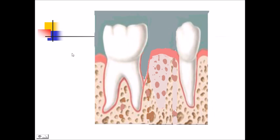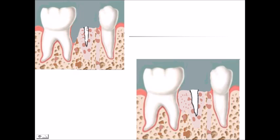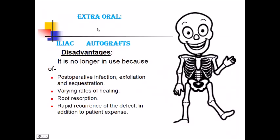Diagrammatic representation of bone swaging: a vertical defect and edentulous area are adjacent. A vertical cut is given and the bone is moved into the defect area — this is known as bone swaging. Iliac autograft from the extraoral site is no longer in use because of post-operative infection, exfoliation and sequestration of the graft, varying rate of healing, root resorption, rapid recurrence of defect, and patient expenses.